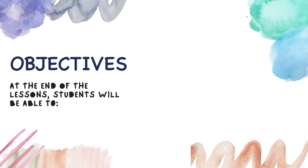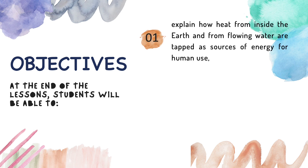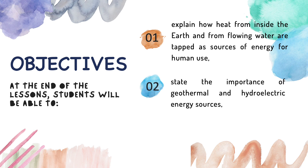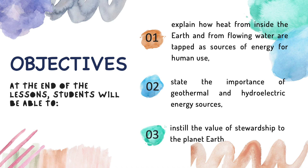To start, allow me to present the objectives of today's lesson. At the end of the discussion, students will be able to explain how heat from inside the Earth and from flowing water are tapped as sources of energy for human use. You are also expected to state the importance of geothermal and hydroelectric energy sources, and to instill the value of stewardship to the planet Earth.